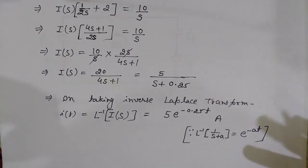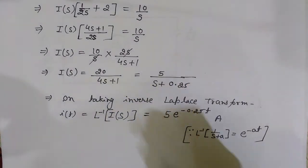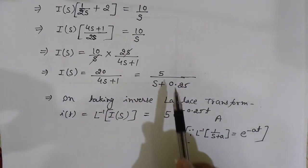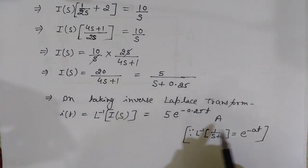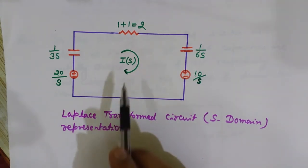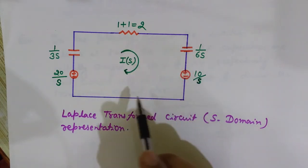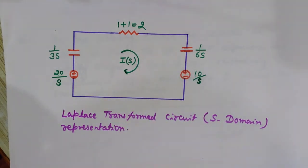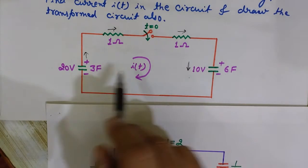This demonstrates how to use KVL, take the Laplace transform to solve in the S-domain, then apply the inverse Laplace to get the time-domain current. The next part of the question is to find the S-domain representation — the Laplace-transformed equivalent of the original circuit.